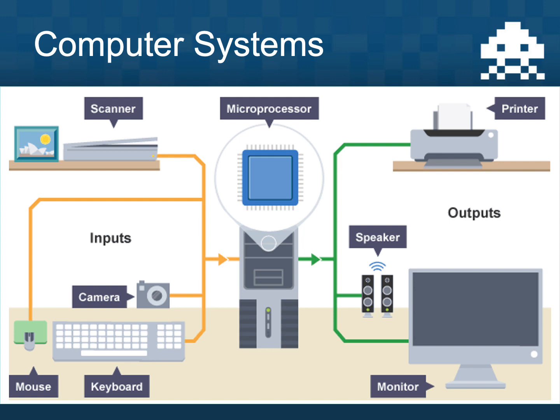The computer is then in the middle and it processes that information. We then have various output devices like a printer, speakers, and a monitor. A printer can print out a document or picture, speakers can output voice or different sounds, and a monitor can display various things onto your screen. So you can begin to see how input, process, and output is used in lots of different computer systems.